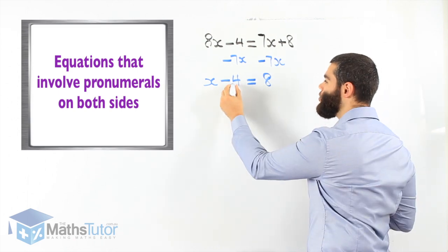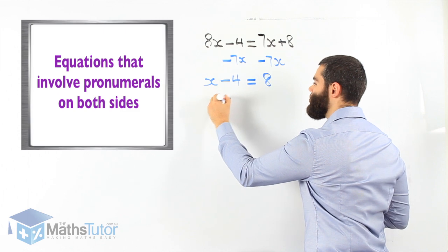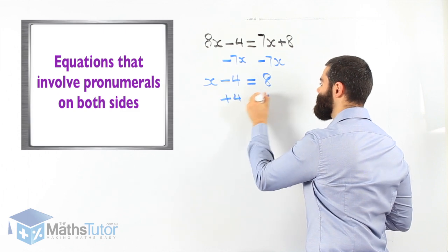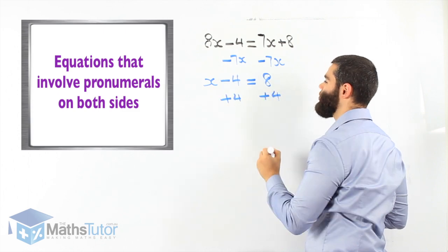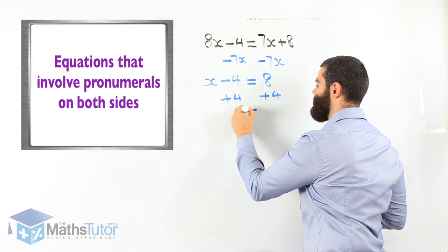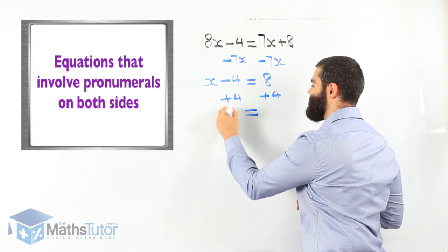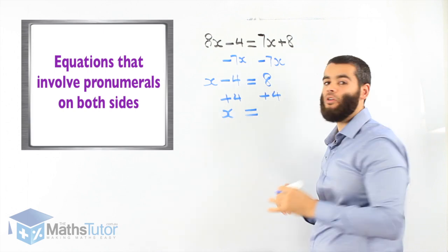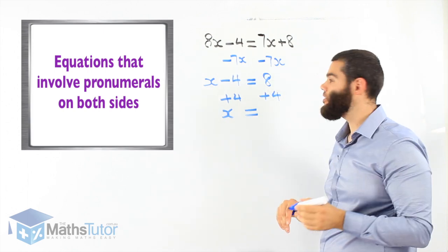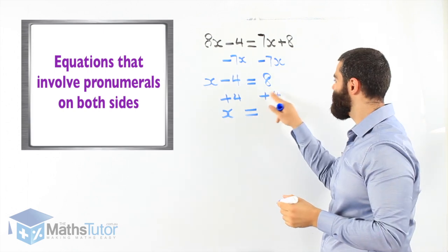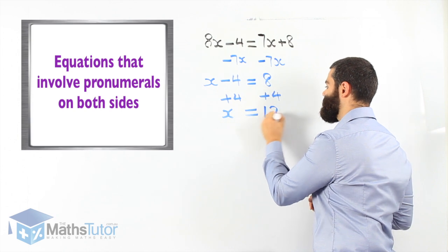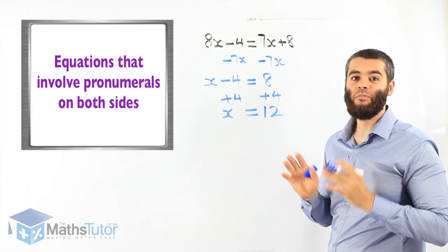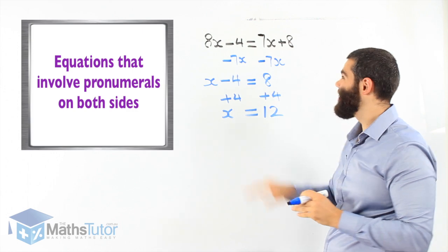We know minus 4 becomes plus 4. x minus 4 plus 4 — the minus 4 is gone. 8 plus 4 is 12. That's our answer. Pretty simple. It looks complicated, but we follow the steps and we get it right.